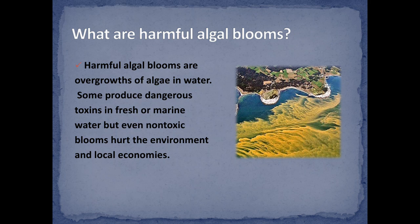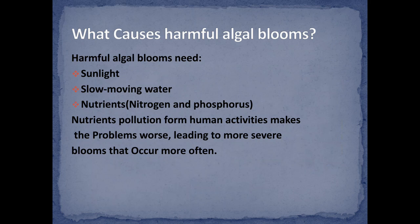What are harmful algal blooms? Harmful algal blooms are overgrowth of algae in water. Some produce dangerous toxins in fresh or marine water, but even non-toxic blooms hurt the environment and local economies. Harmful algal blooms need sunlight, slow-moving water, and nutrients — for example, nitrogen and phosphorus. Nutrient pollution from harmful human activities makes the problem worse, leading to more severe blooms that occur more often.